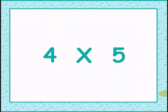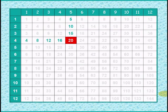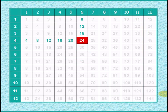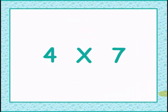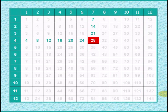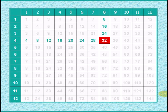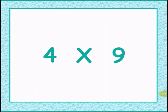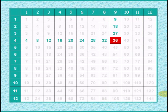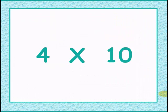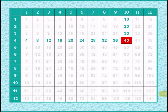4 times 5 is 20. 4 times 6 gives 24. 4 times 7 is 28. 4 times 8 is 32. 4 times 9 is 36.